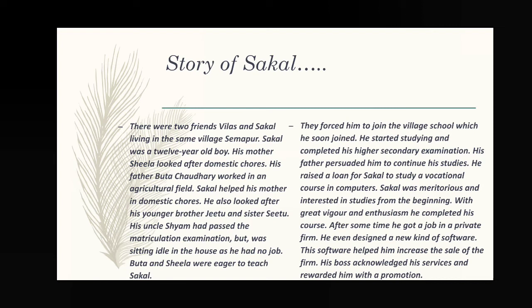Sakal's family had five members: his mom, dad, one younger brother, one sister, and one uncle. His uncle Sam had passed the matriculation examination but was sitting idle — not getting any job. Despite financial difficulties, Buta and Sila were eager to teach Sakal. They tried to send him to school despite money crunches and economic crises, trying to make him educated and skillful.